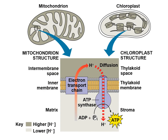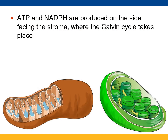One great similarity: they both pump protons using electron transport and use that proton motive force — chemiosmosis — to spin ATP synthase. As it spins, it forces inorganic phosphate onto ADP to create ATP. ATP and NADPH are produced on the side facing the stroma, which is the cytosol of the chloroplast — that's where we see the Calvin cycle occurring.